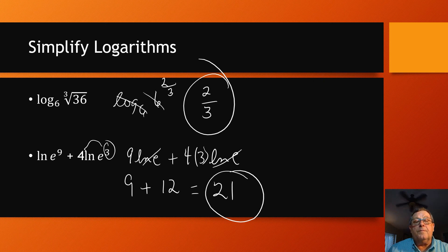Simplifying logarithms. I converted the radical to a rational exponent, then canceled out the log 6 and the 6 on the first one. It just left me with 2 thirds. I used the power property on the second one, moving the 9 out front. So we've got 9 LN E. That cancels, leaving me with just 9 plus 4 times 3 LN E. The LN E cancels. Now I've just got 4 times 3. 9 plus 12 is 21. And there we go. We have simplified those two logarithms.